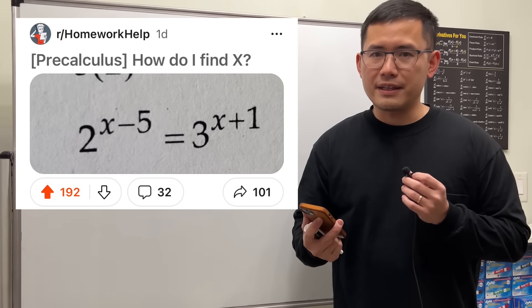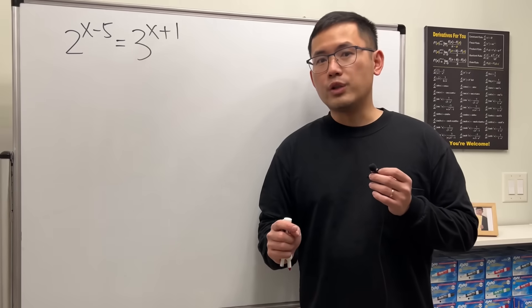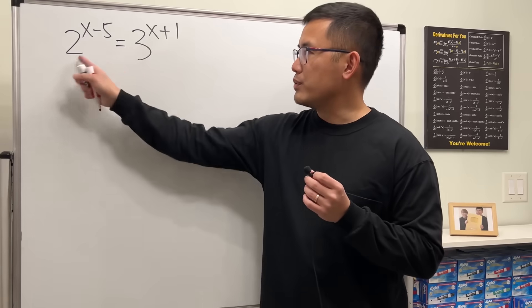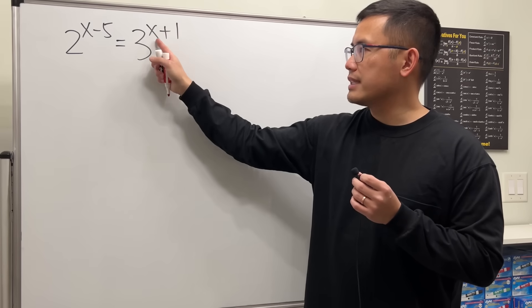Pre-calculus, how do I find x? Well, let me show you. Here we have an exponential equation with two different bases. We have 2 and 3 right here. And notice that we have 2 to the x minus 5, that's equal to 3 to the x plus 1.